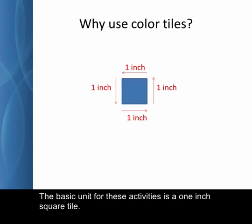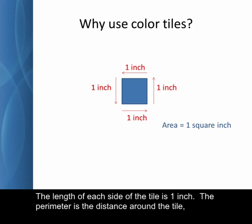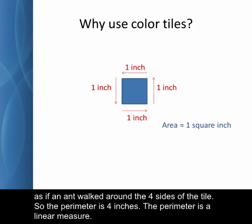The basic unit for these activities is a one inch square tile. The area of one tile is one square inch. The area is measured in square units. The length of each side of the tile is one inch. The perimeter is the distance around the tile, as if an ant walked around the four sides of the tile. So the perimeter is four inches. The perimeter is a linear measure.